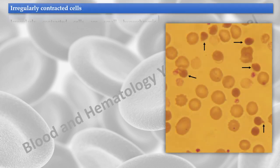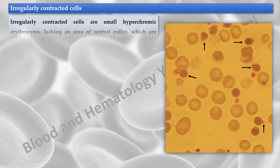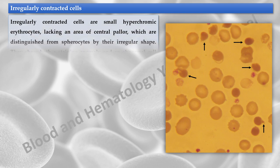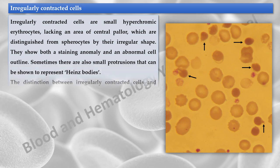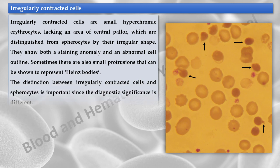Irregularly contracted cells are small hypochromic erythrocytes lacking an area of central pallor, which are distinguished from spherocytes by their irregular shape. They show both a staining anomaly and an abnormal cell outline. Sometimes there are also small protrusions that can be shown to represent Heinz bodies. The distinction between irregularly contracted cells and spherocytes is important, since the diagnostic significance is different.